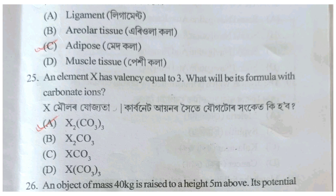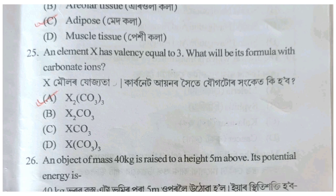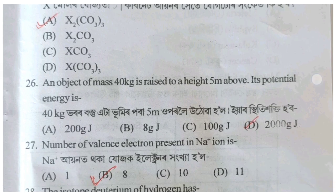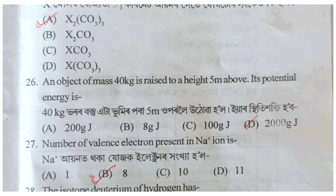An element X has valency equal to 3. What will be its formula with carbonate ions? With three carbonate ions, the formula will be Option A: X₂(CO₃)₃.